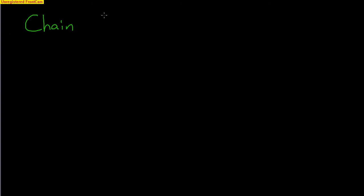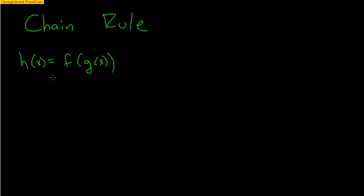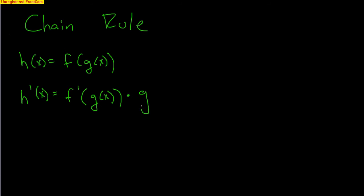Here is the chain rule. I'm going to write it two different ways. If you have a function h of x, and that function is a function within a function — so you have a function g of x that is within a function f of x — to find the derivative, the first thing you do is take the derivative of the overall function f of x, plug g of x into that derivative, and then multiply by the derivative of g of x.